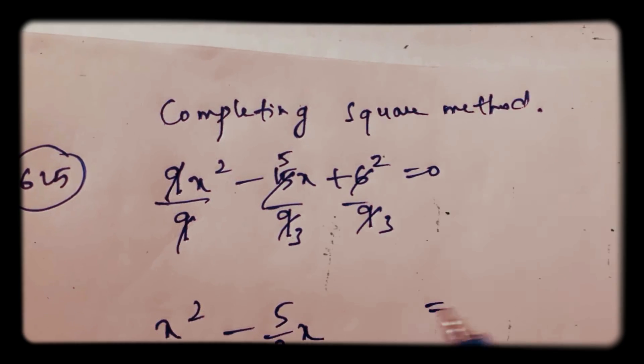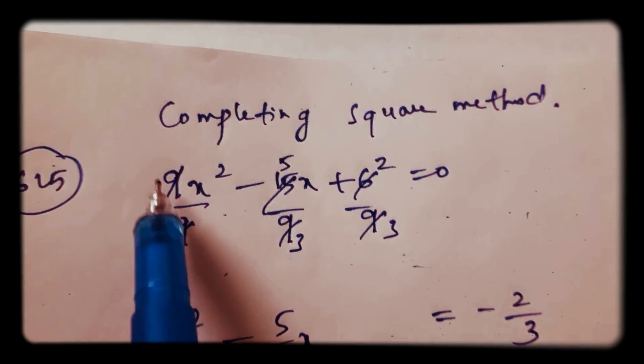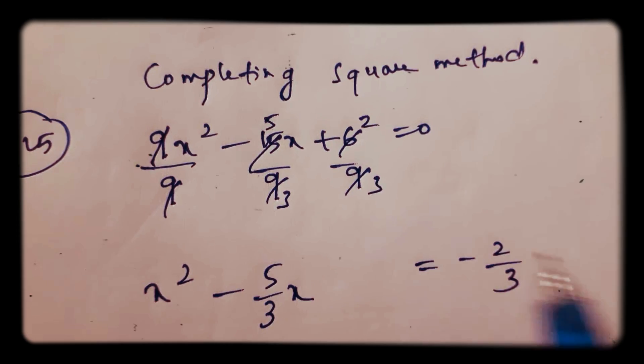Send this constant to the other side. After making it x square, then send the constant to the other side.